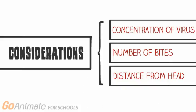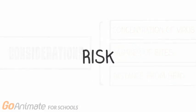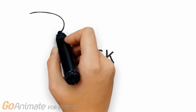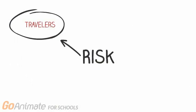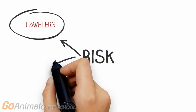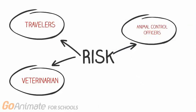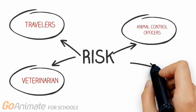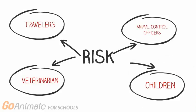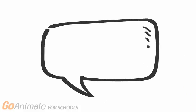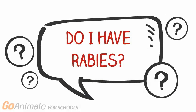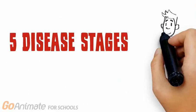Having a bite closer to the head also increases the probability, as the virus doesn't have to travel as far to reach the brain. Anyone exposed to unvaccinated animals is at greater risk. People at greater risk include international travelers, those with occupational risks such as veterinarians, wildlife professionals, and animal control officers, as well as children — because they often play with animals, may not report bites, and are more likely to be bitten on the head and neck.